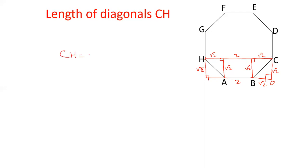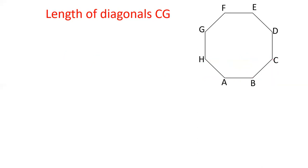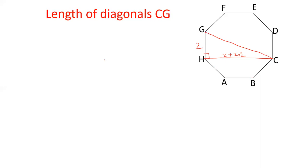So the length of CH will be equal to 2 plus 2 root 2. This will be the length of CH, derived from the values calculated in the previous step.